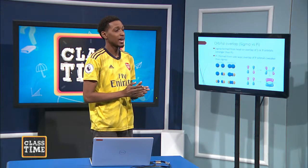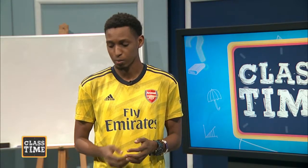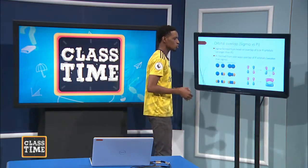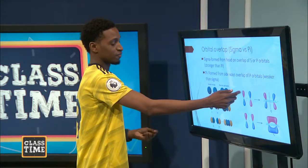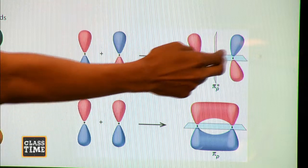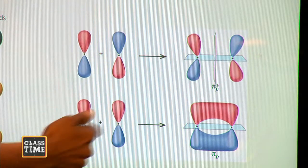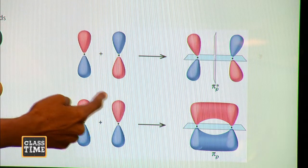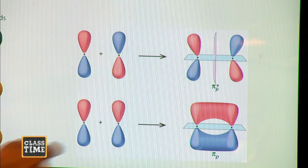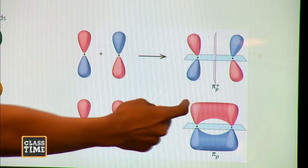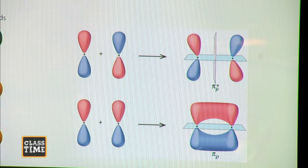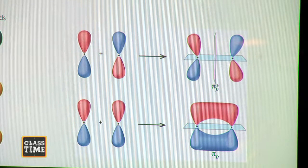A pi bond is formed from the sideways overlap of p orbitals. If two p orbitals are not in phase, there is no bonding. But once they are in phase, you have overlap — one lobe overlaps with another lobe, and another lobe overlaps with its corresponding lobe, and everything generated from that sideways overlap is what we call a pi bond. It represents a single bond, and for there to be overlap, the orbitals have to be in phase.